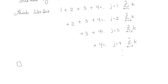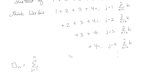We can say box_n equals an outer summation with j going from 1 to n, and then on the inside, a summation where k starts at j and goes to n. You can see that the starting indices all line up. So k goes from j to n on the inside.